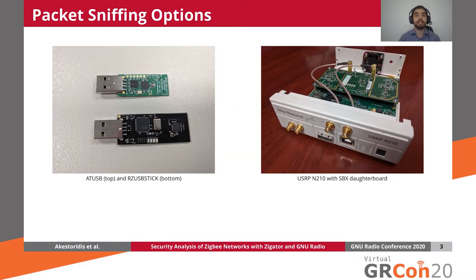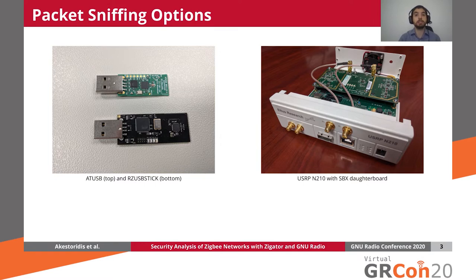Starting with the most fundamental functionality we need for our testbed — the ability to capture Zigbee packets — generally speaking, we have two options. We can either use a dedicated IEEE 802.15.4 transceiver, or we can use a software-defined radio. In the case of a dedicated transceiver, we can use, for example, an AT-USB with its default firmware and TCP dump, or an RZ-USB stick with the Killer-B firmware and tools. Alternatively, we can use a software-defined radio to capture IQ signals and perform demodulation in software with GNU Radio.